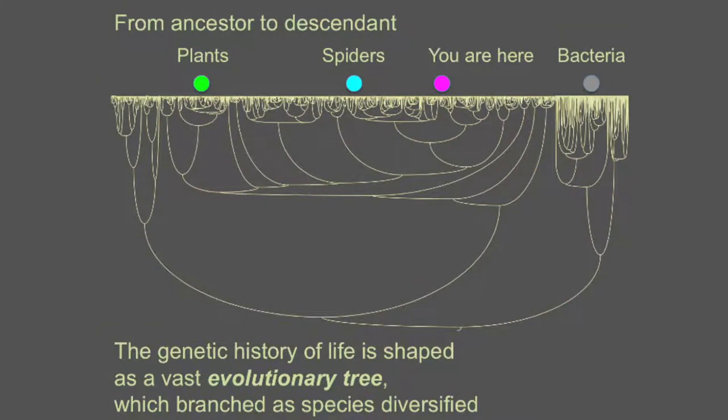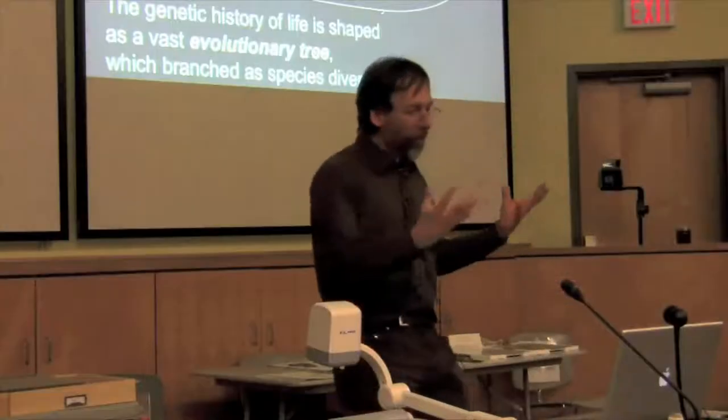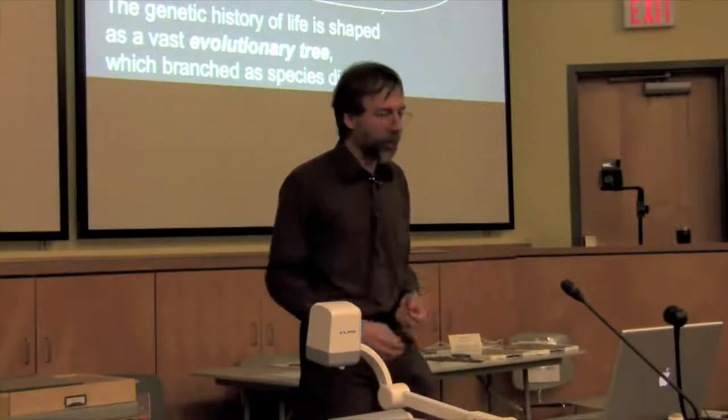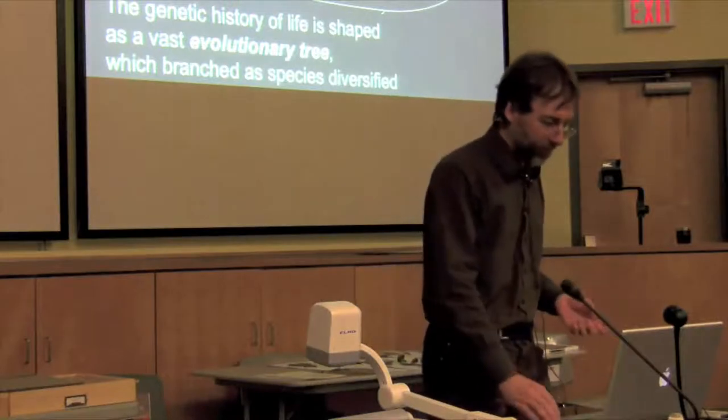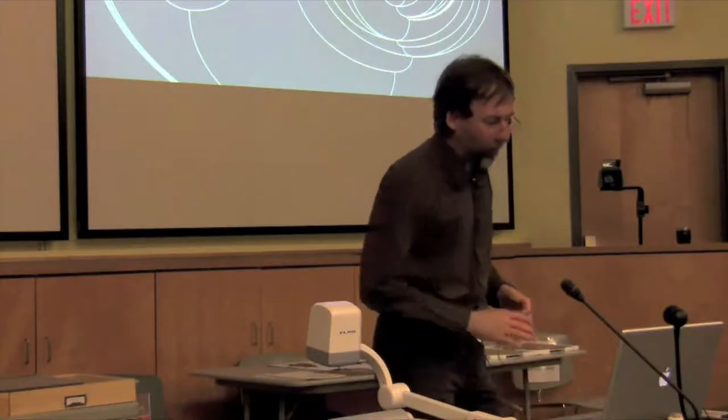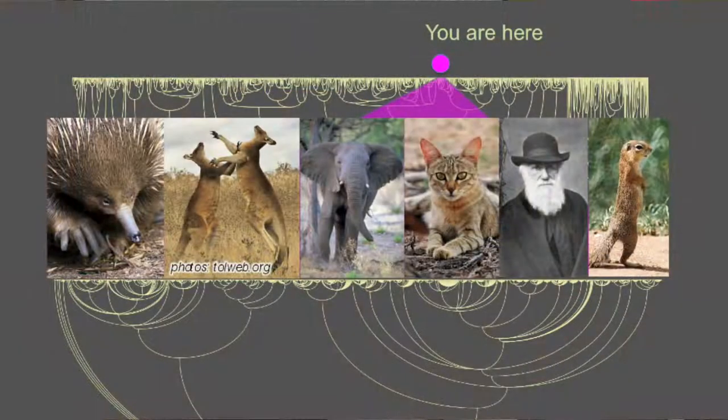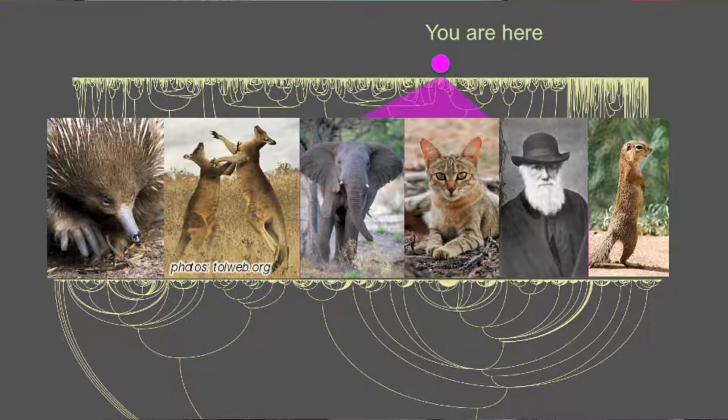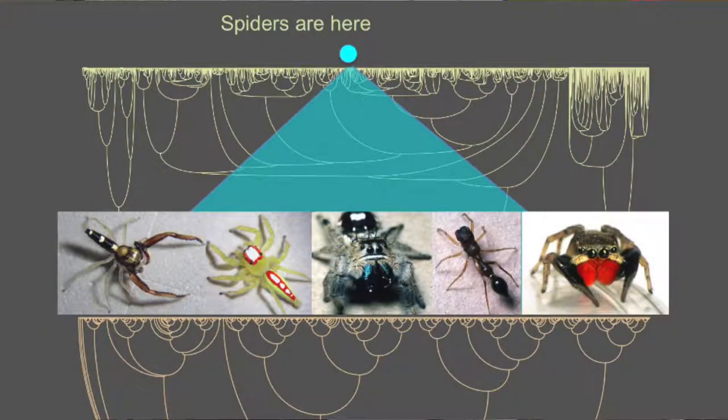You are here. The spiders are there. Bacteria are there. Plants are there. Everything we see around us is somewhere on this tree. Even viruses presumably came from somewhere on this tree, possibly many places. We might look at our neighborhood a little bit more closely. You're there, there are the mounds. We might look at the spider neighborhood, in particular the jumping spider neighborhood. There are some jumping spiders. So we can look at particular sections of this evolutionary tree.